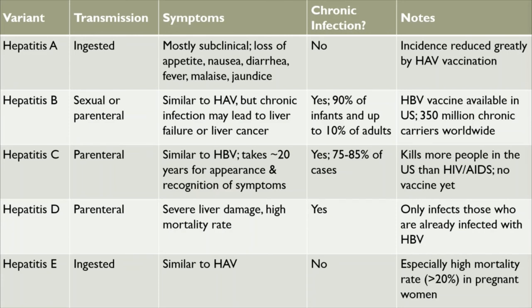Hepatitis C is transmitted parenterally and is particularly a danger for people who use intravenous drugs. It is similar in symptoms to Hepatitis B, but has an incubation period of 20 years before symptoms appear. It becomes chronic in 75 to 80% of cases. One fact not widely known is that Hepatitis C kills more people in the United States than HIV and AIDS. There is currently no vaccine for Hepatitis C, though this is still being intensely researched.